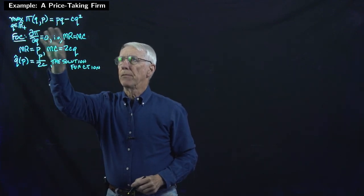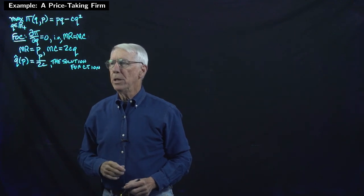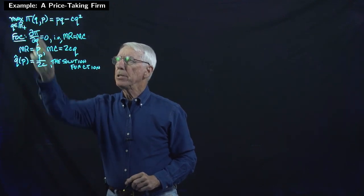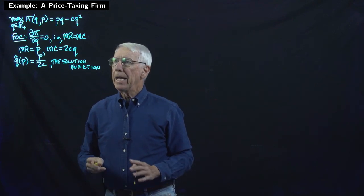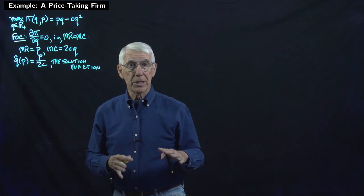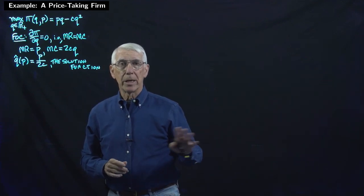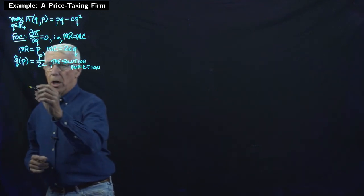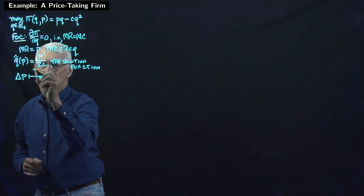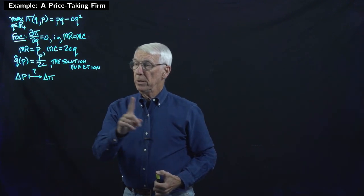Notice that the profit function is strictly concave, so the second-order condition is satisfied. Now, what I want to know is what's going to happen to the level of profit if the parameter — the price in the market — changes. The firm can't change that price itself; it just takes the market price as given. But that price can change, and we want to know how that affects profit. That's the question the envelope theorem is going to help us with.